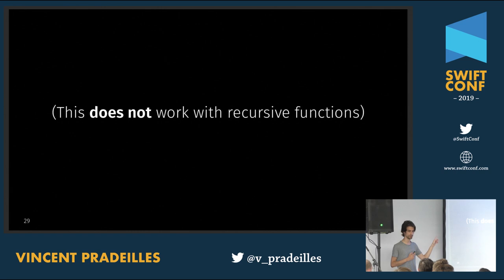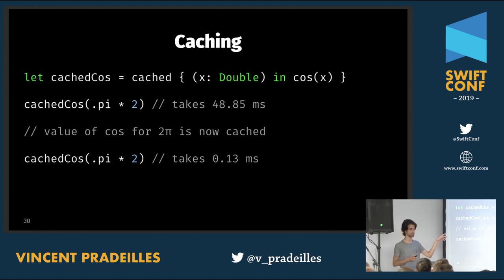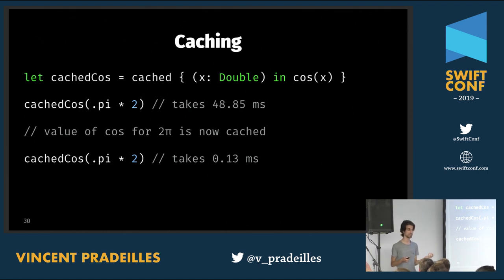One caveat: this code does not work with recursive functions. But for practical use — say, caching trigonometric functions in 2D/3D graphics code — we can write `let cachedCos = cached { cos($0) }`. The first call computes normally; subsequent calls retrieve the cached value. What's nice is that caching is added transparently with just the `cached` pseudo-keyword, without polluting the code with extra state or implementation details.